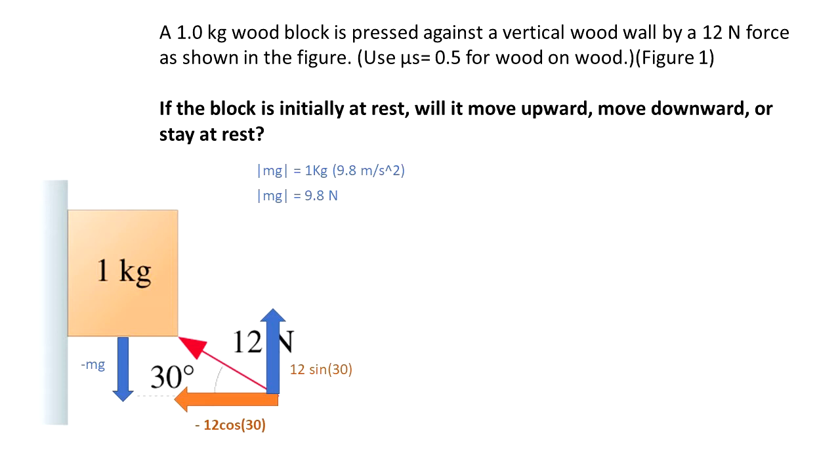The x component of the 12 N force is pushing into the wall, but the wall is providing support. So the box is not going to go into the wall, it's not trespassing the wall. That means that the summation of the forces in the x is going to be 0.